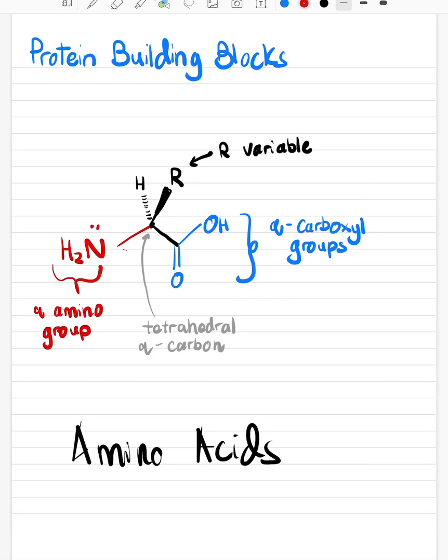The generic formula of the amino acid is right in front of us. The amino acid is composed of an amino group, as we see over here, and it's composed of a carboxylic group or carboxyl group.